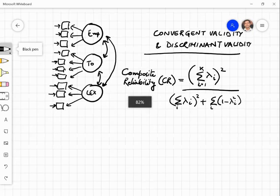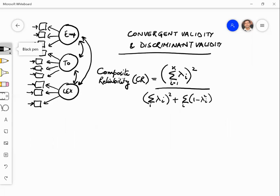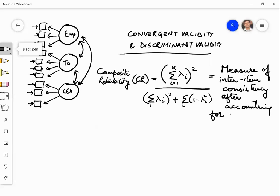This is basically the formula and what does composite reliability say? Composite reliability is again just like Cronbach's alpha. It is a measure of inter-item consistency after accounting for measurement errors. This CR is computed from the measurement model.